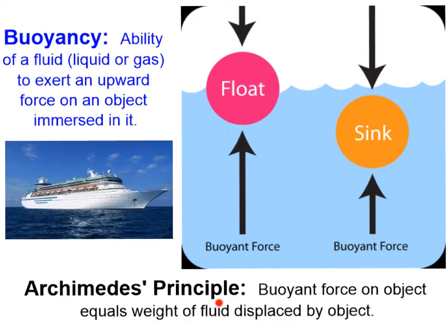Back in the third century BC, a Greek mathematician named Archimedes made a discovery about buoyancy. It's called Archimedes' principle: the buoyant force on an object is equal to the weight of the fluid displaced by the object.